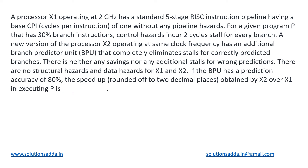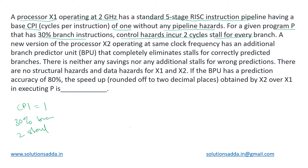This is an organization question based on pipeline. We have been given processor X1, which is operating at 2 gigahertz and has a standard five-stage RISC instruction pipeline with a base CPI of one. The initial base CPI for a normal processor is one, assuming no pipeline hazards. For a given program P that has 30% branch instructions, control hazards incur two stall cycles for each branch.